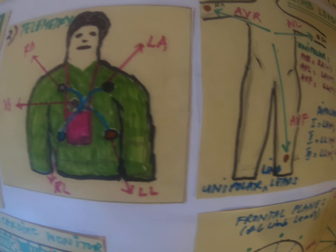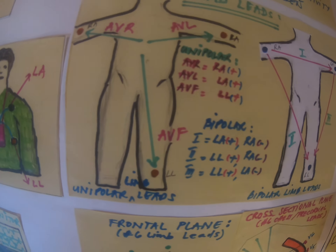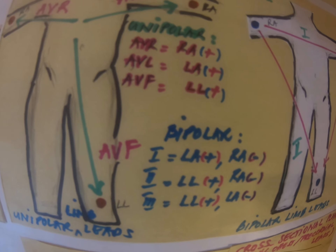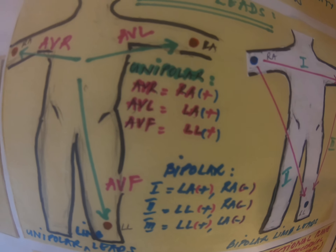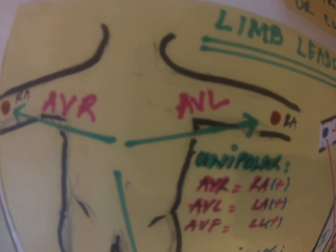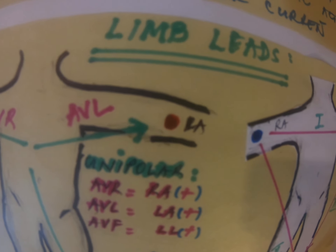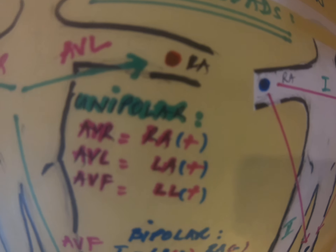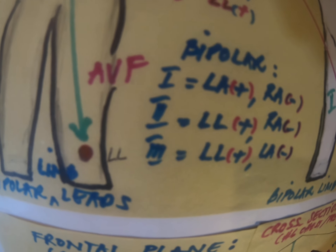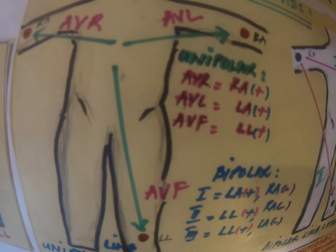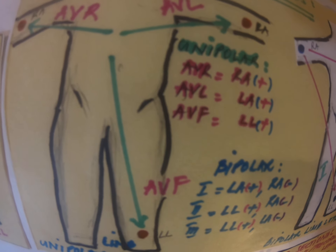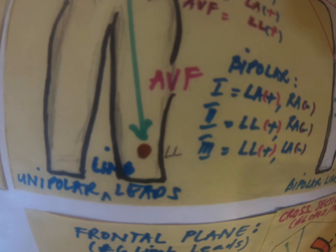The unipolar limb leads have only one electrode and they are all positive. We have the augmented voltage right arm, augmented voltage left arm, and augmented voltage left foot. To create a negative electrode, they convert two electrodes to become negative — and that's how they do it.